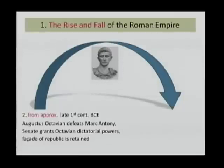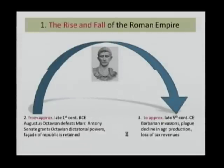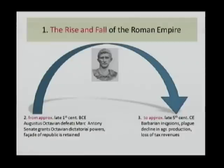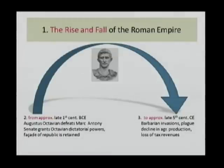The third point of the arc is the end — from and to — approximately the late fifth century common era: barbarian invasions, plague, decline in agricultural production, loss of tax revenues, etc., which harass the empire and result in its fall.